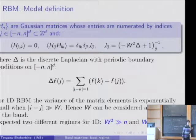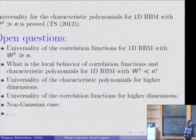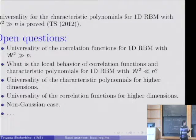But almost nothing was done in the bulk of the spectrum. There are very few results, and they are not sharp at all. The results that I obtained recently is the universality of characteristic polynomials for 1D random matrices with W squared much bigger than n. So I can prove now that this behavior is the same for Gaussian unitary ensemble. But, of course, this is only the first step.